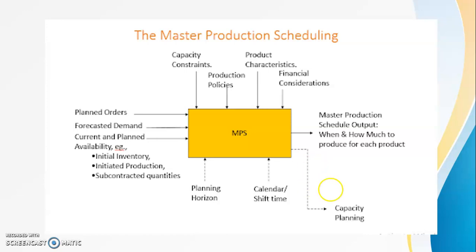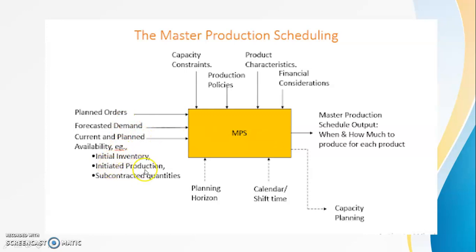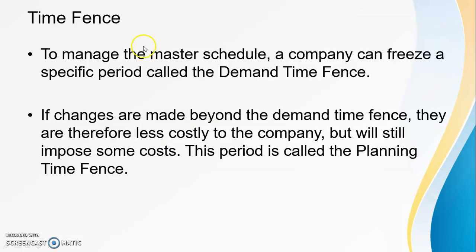MPS also provides protection against shortages, unexpected scheduling buffers, and inefficient allocation of resources. Here, the MPS calculates the planning capacity — when and how much to produce — and analyzes the initial inventory. It then initiates production, calculates the subcontracted quantities, and considers product characteristics and capacity constraints within the planning horizon.